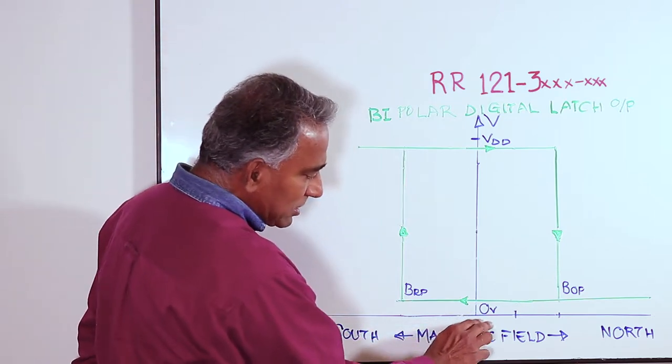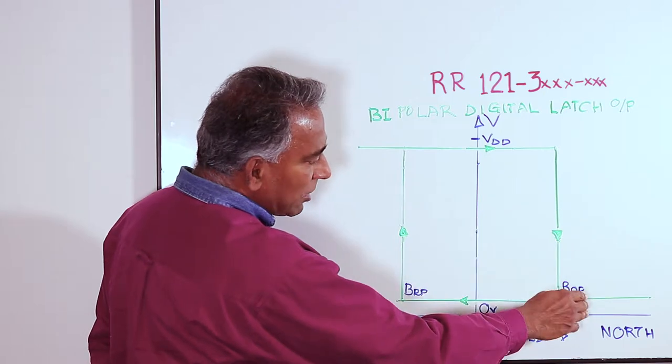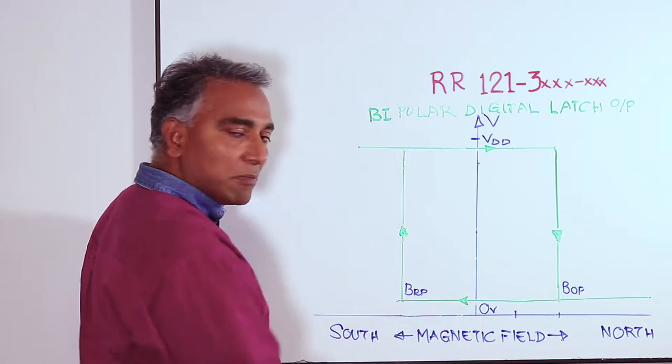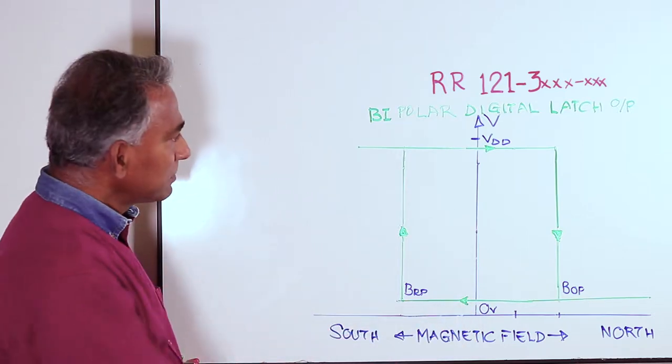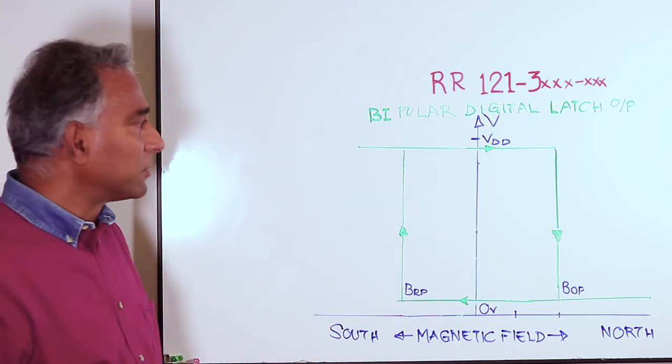What that means is once the output is tripped to an on state and the magnet is taken away, the output remains in the on state. We say the output has latched. And that's the reason the output is called a latching bipolar output.